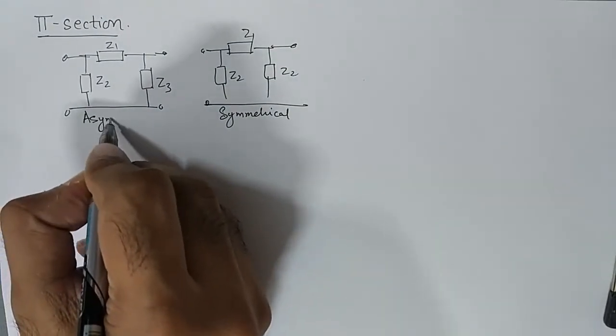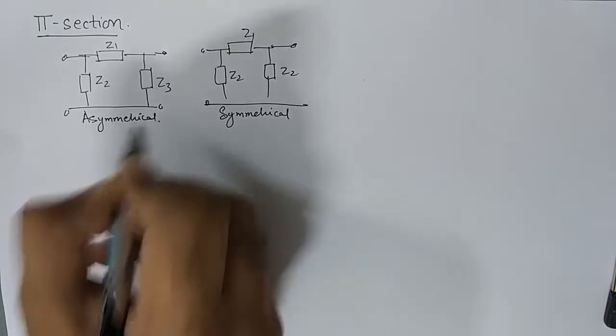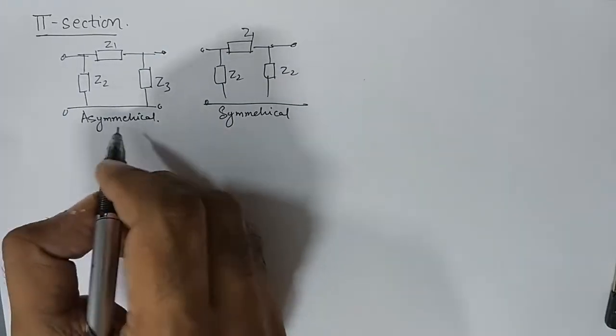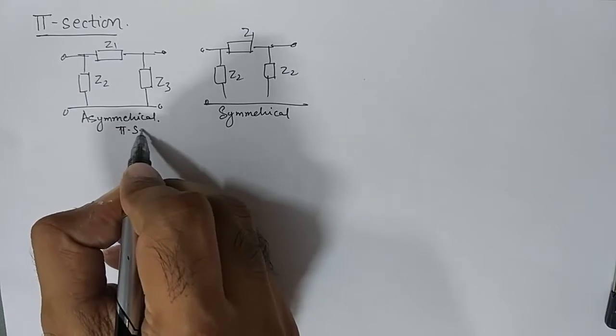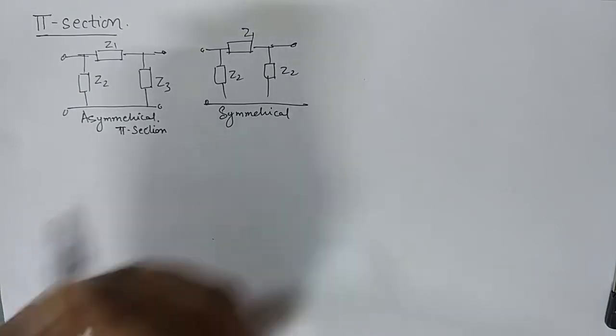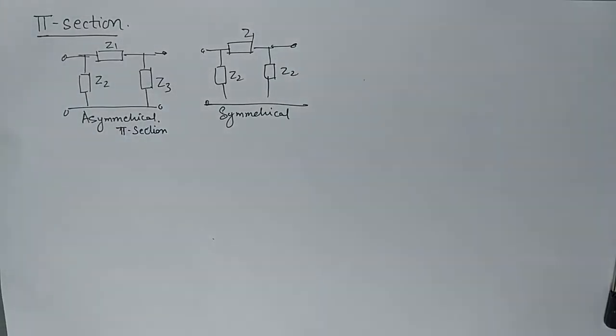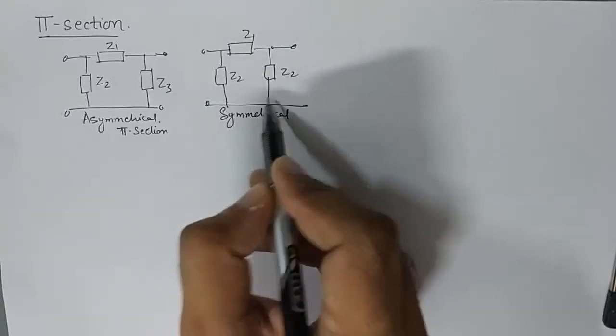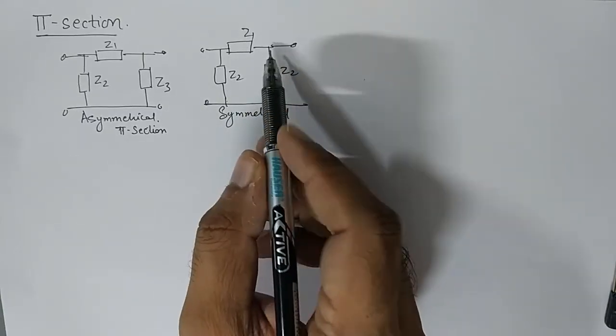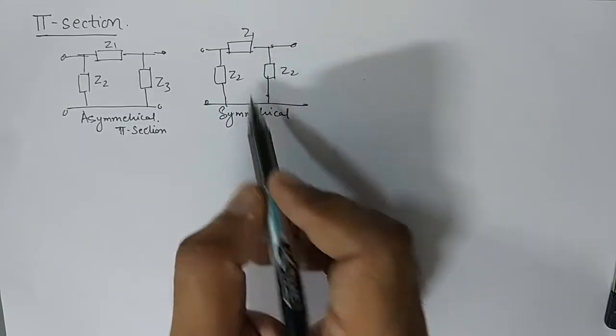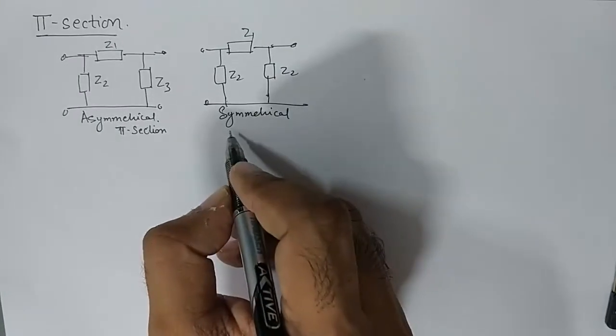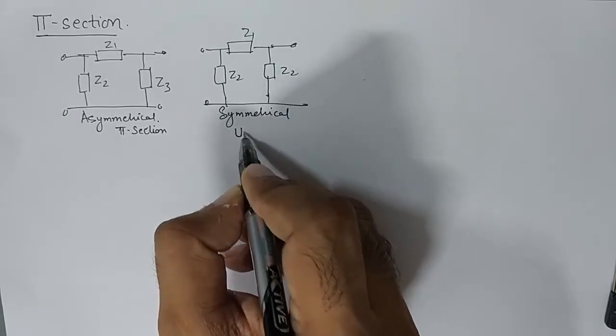Of course asymmetrical, the π-section and this kind of configuration where the series has an impedance on one side and it does not have an impedance on the other side is known as unbalanced.